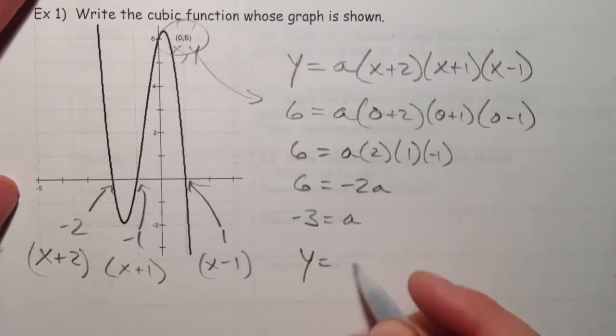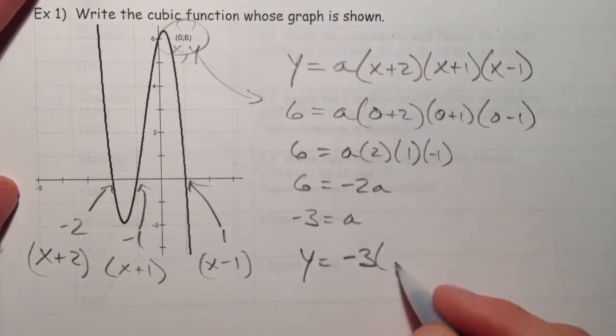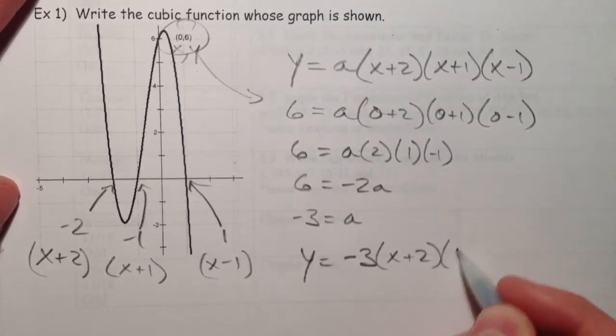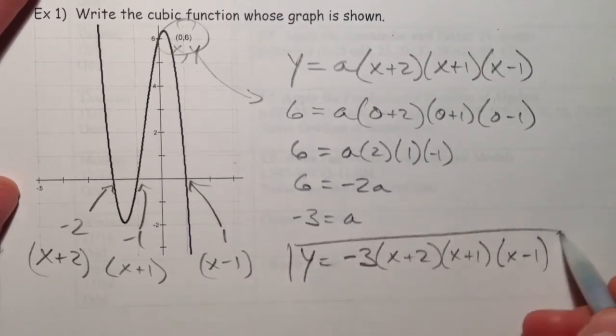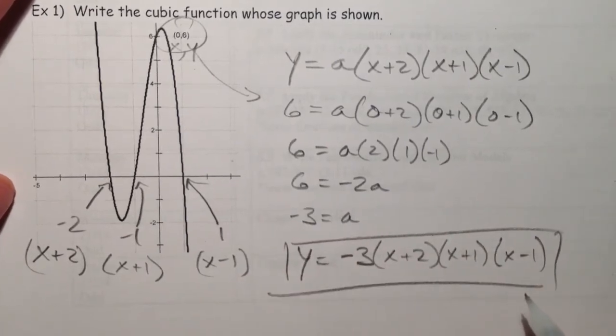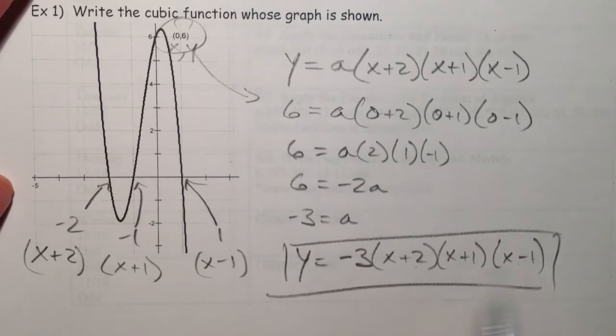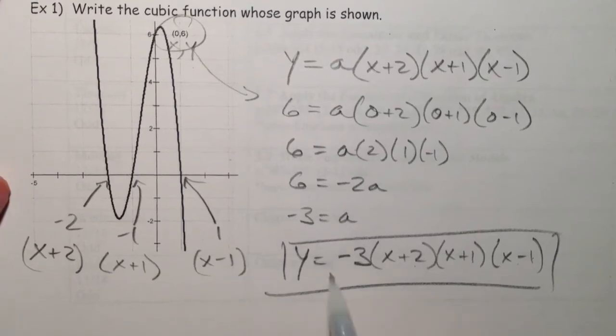So then our equation is y equals negative 3, x plus 2, x plus 1, x minus 1. Nice part is, if you double check, plug in 0 in here. 2 times 1 times negative 1 times negative 3 is a positive 6. You can double check that it has all of those points. Actually, you could graph this whole thing and just double check that it looks like that.